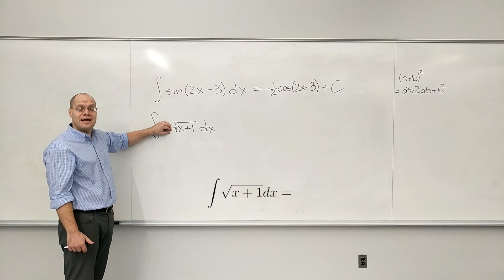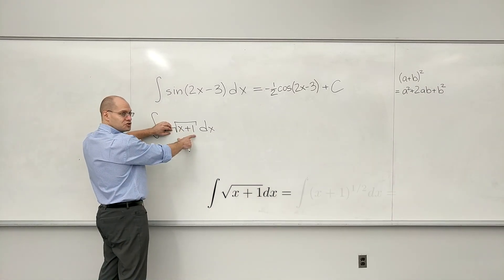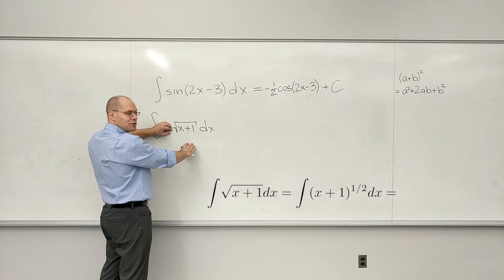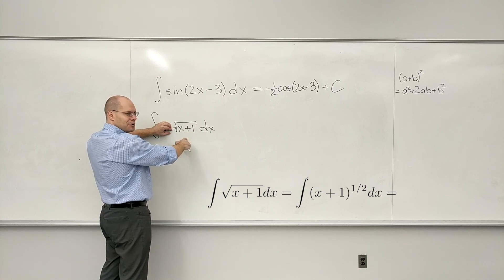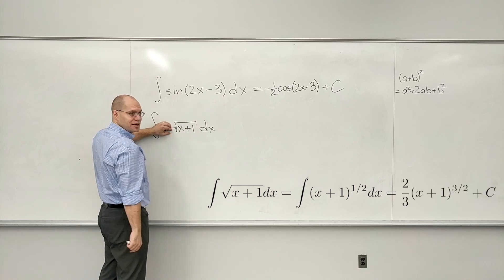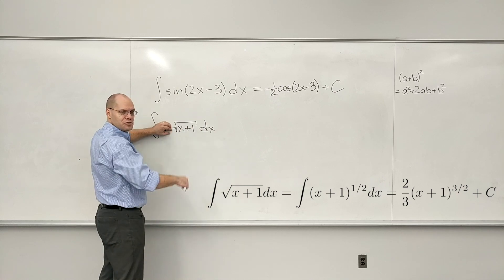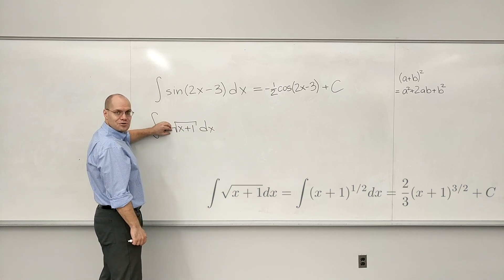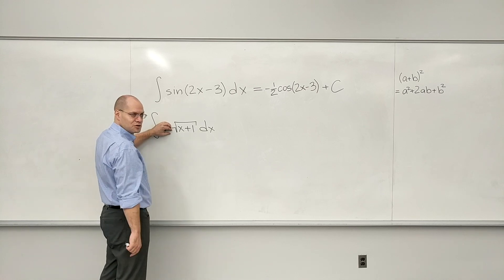Yeah, what will the answer be? This quantity, it's right now to the 1 half, so it's pure power law. You add 1 to the power, becomes x plus 1 to the 3 halves. Make up for it with 2 thirds. Okay, so that wouldn't bother you, right? If it was just the square root.